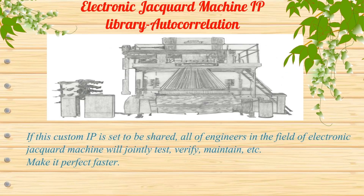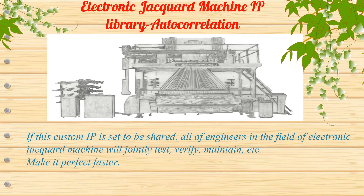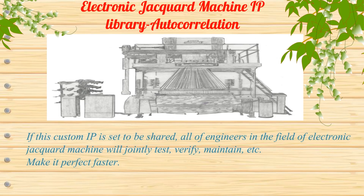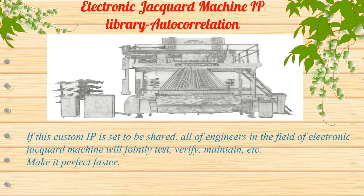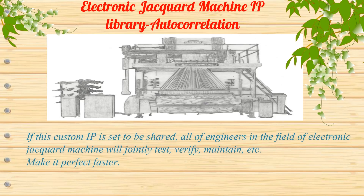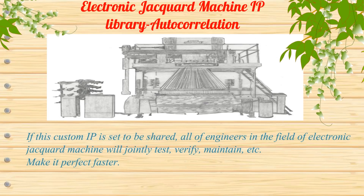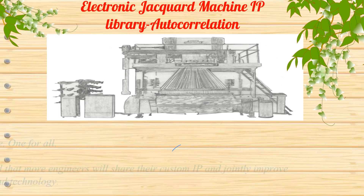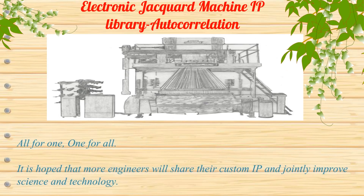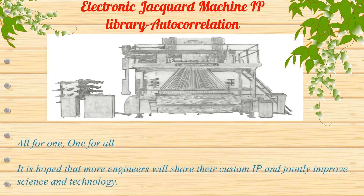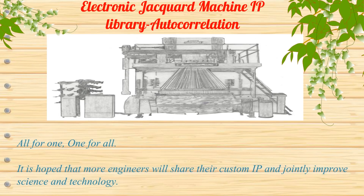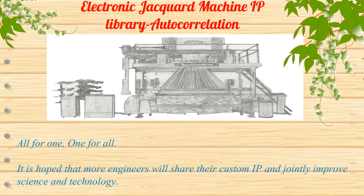If this custom IP is set to be shared, all engineers in the field of electronic jacquard machines will jointly test, verify, maintain, etc., making it perfect faster. All for one, one for all. It is hoped that more engineers will share their custom IP and jointly improve science and technology.